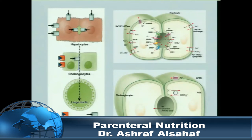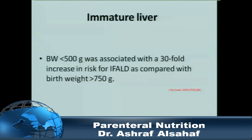We usually measure bilirubin as the indicator for cholestasis. If there is any problem at the level of transporters or pumps, or chemicals produced by bacteria — especially E. coli — that will interfere with conjugation and excretion and result in cholestasis. There is a study showing that infants less than 500 grams have a 30-fold increase in liver disease compared to those over 750 grams.